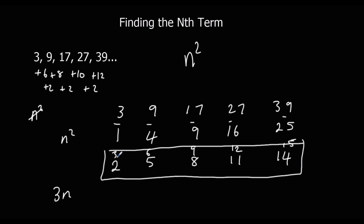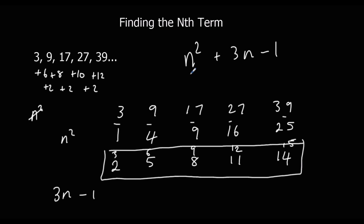The remaining sequence after taking off n squared is 3n minus one. So the nth term is n squared plus 3n minus one. That's the answer.